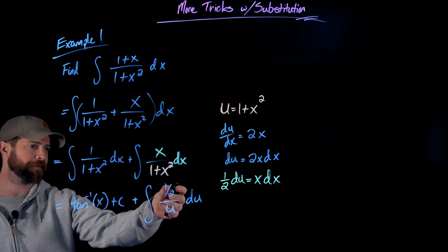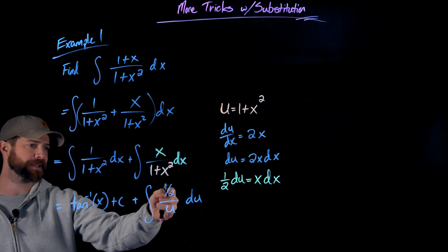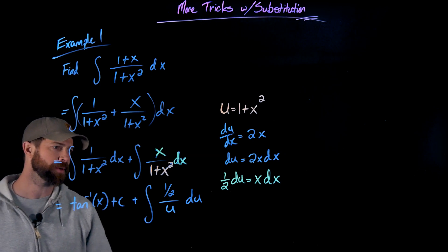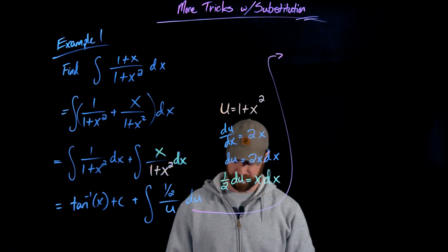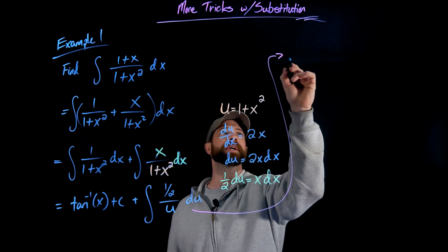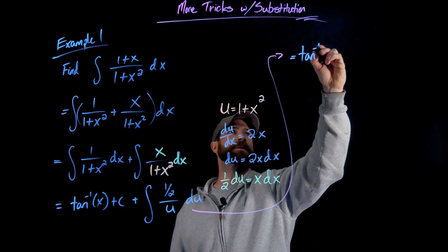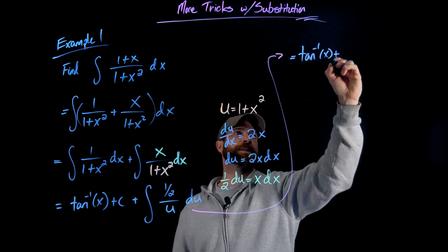So then what I'm going to do is just finish this off, factor out this 1/2. This is going to give me a 1 over u du, which will end up being this natural log that we've already seen a couple times with this technique. But here we go.